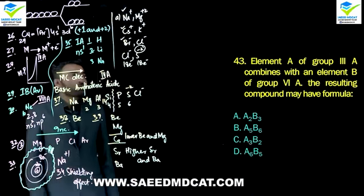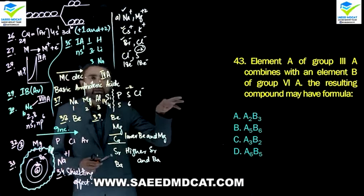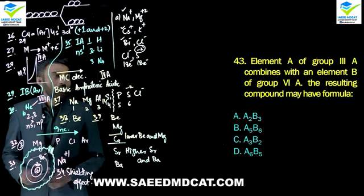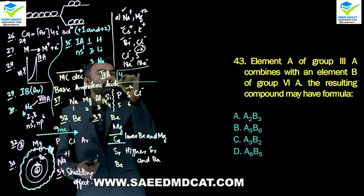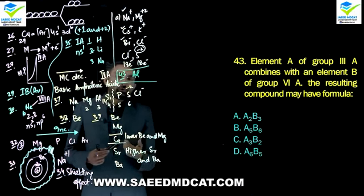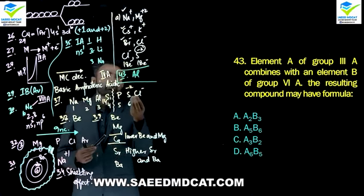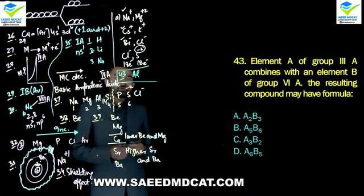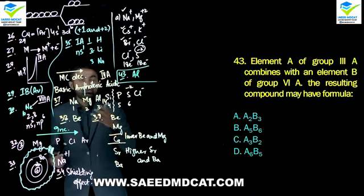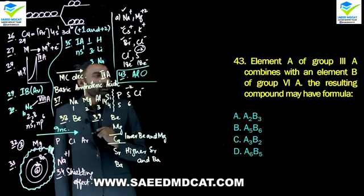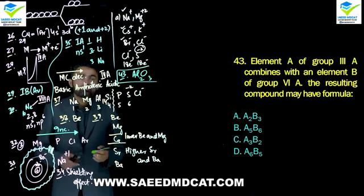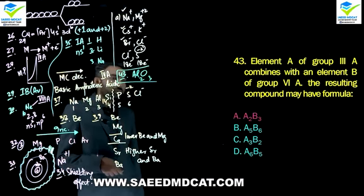Question 43: Element A of group 3A combines with element B of group 6A. What is the formula of the resulting compound? When an unfamiliar element letter is given, substitute a known representative element. For group 3A, use aluminium; for group 6A, use oxygen. Aluminium reacting with oxygen gives Al2O3. Apply that logic to the abstract elements A and B to get the formula. Alpha option gives the correct formula based on this reasoning.